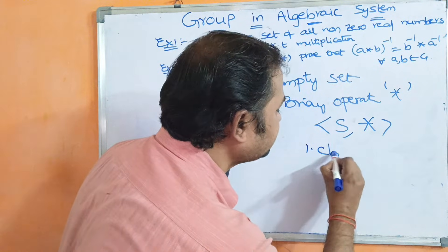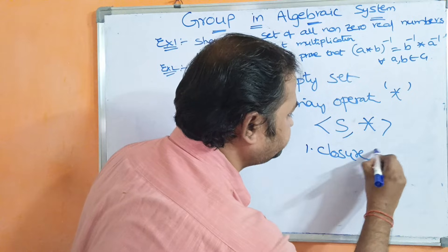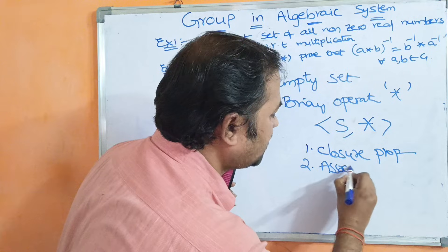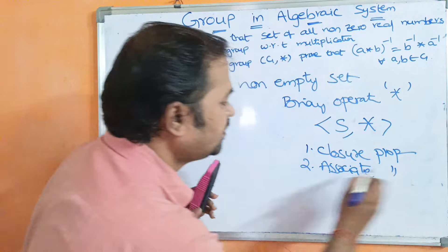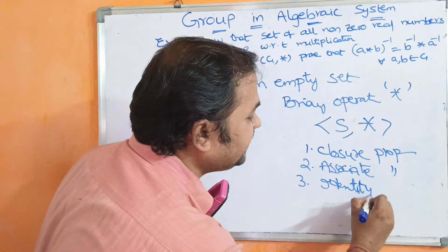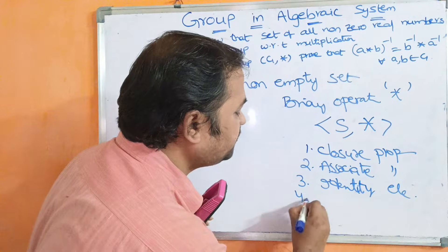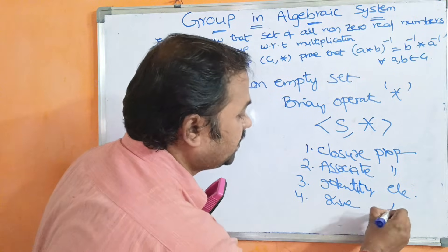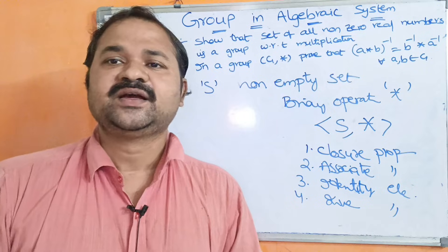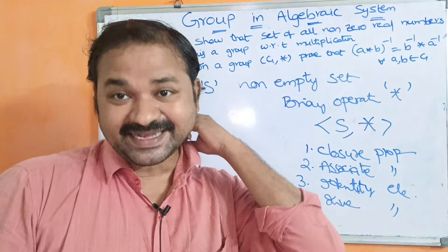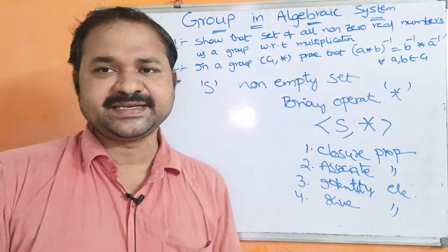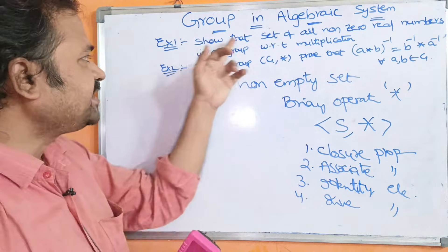The four properties are: first, closure property; second, associative property; third, identity element; and fourth, inverse element. If an algebraic system satisfies these four properties, then we can say that it is a group. We will discuss all these properties by demonstrating the first example.